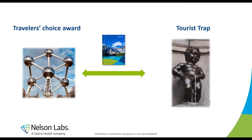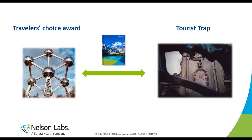As a good guide, I'll give you some suggestions — call them travel choice awards, like visiting the Atomium in Brussels — or warn you about potential tourist traps. I'll use a picture of the Manneke Pis statue, the famous peeing boy in Belgium. It looks great in pictures, but in reality it's very, very small, so you might be disappointed. It's a potential tourist trap, but also worth seeing.